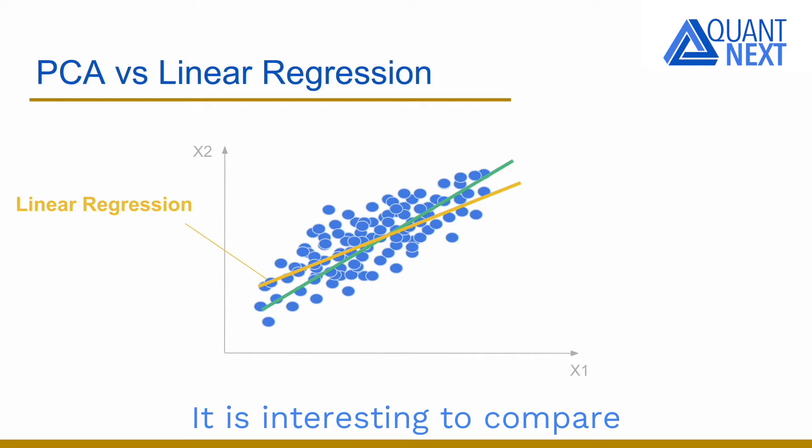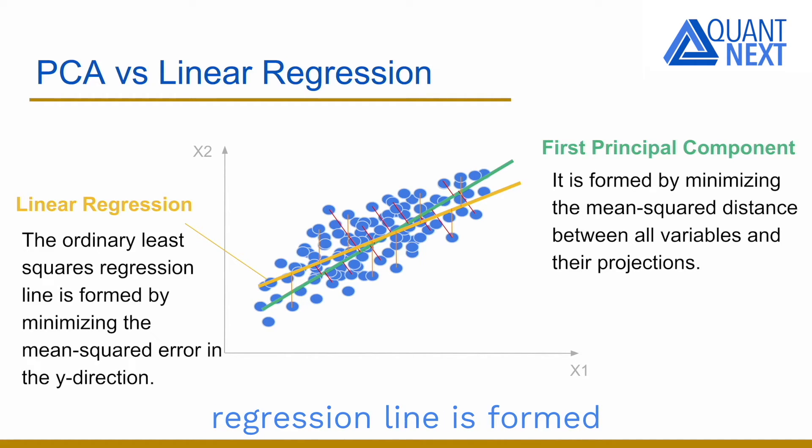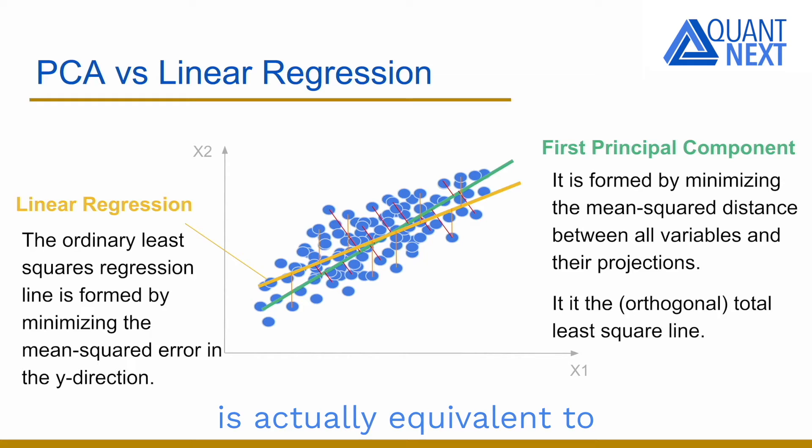It is interesting to compare PCA with simple linear regression of x2 on x1. While the first principal component is formed by minimizing the mean-squared distance between all variables and their projections, the ordinary least-squared regression line is formed by minimizing the mean-squared error in the y direction. So the two methods will give different results in general. The first principal component is actually equivalent to the total least-squared line, which is another type of linear regression.